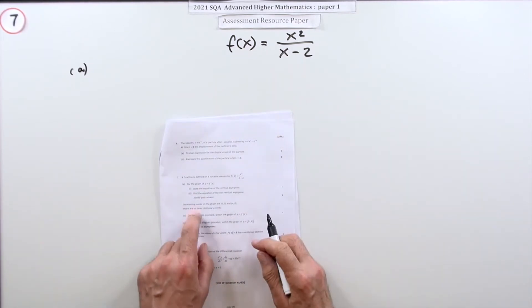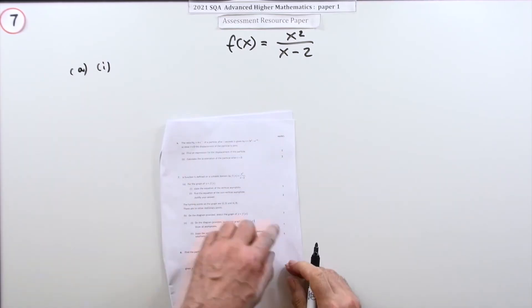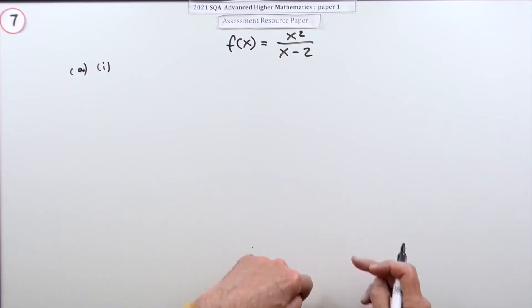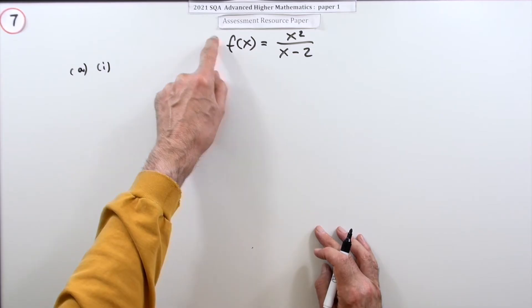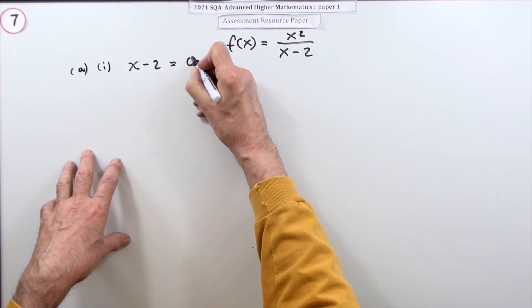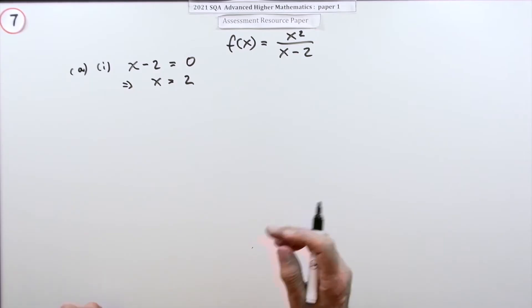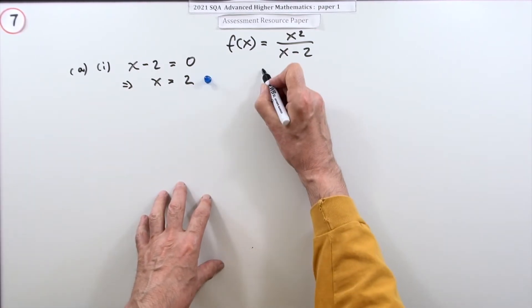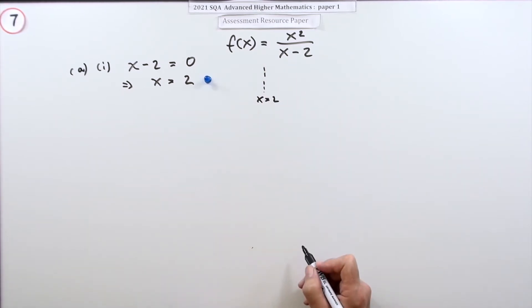Part a first: for the graph y equals [f(x)], state the equation of the vertical asymptote for one mark. The vertical asymptote means the y-coordinate shoots off to infinity, and that only happens if the denominator is zero. So setting the denominator equal to zero gives x equals 2.